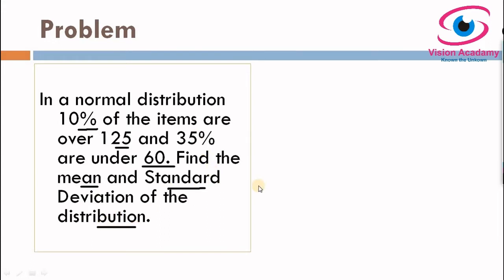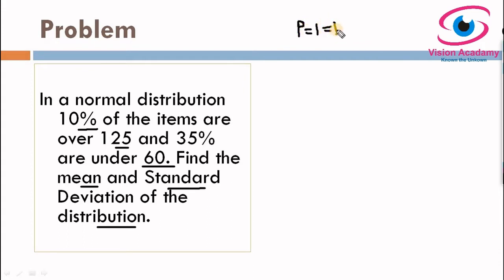Before moving into the problem, we need to realize the percentage in the normal curve. As I told you already, the normal curve or normal distribution is expressed in terms of probability. The total probability equals 1, which is also equal to 100%. When we express this 100% in terms of proportion, we consider it as 1. So we have to locate this 10% and 35% in the normal curve first, then we can calculate the mean and standard deviation.